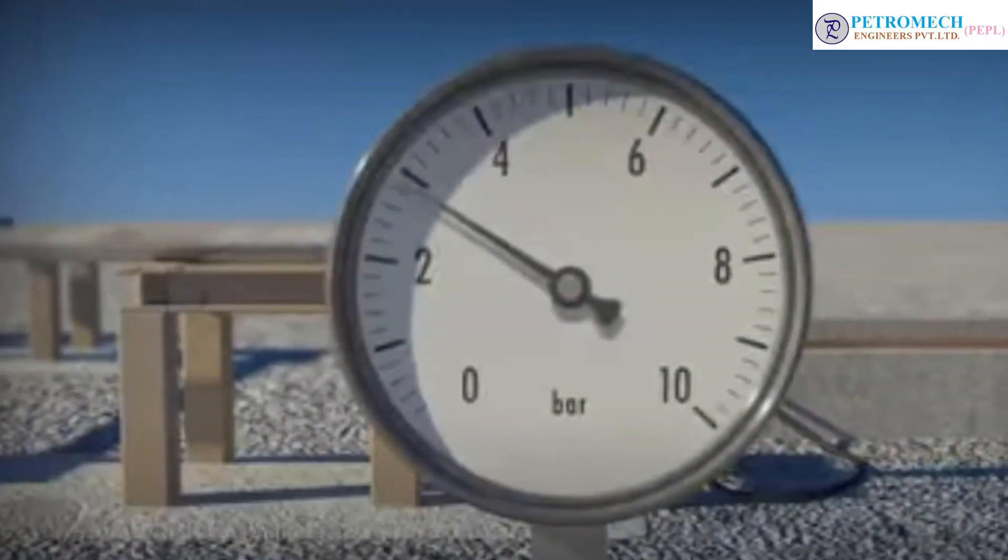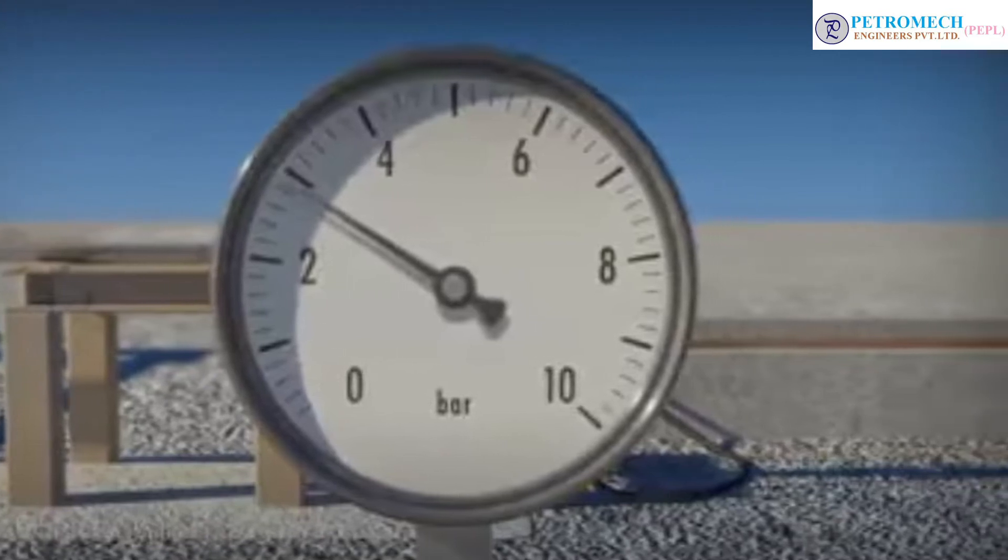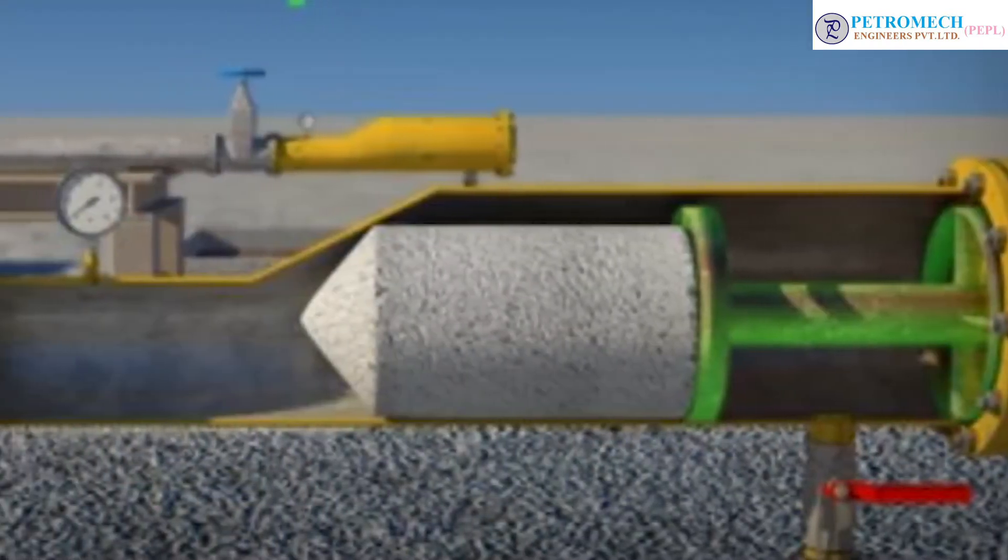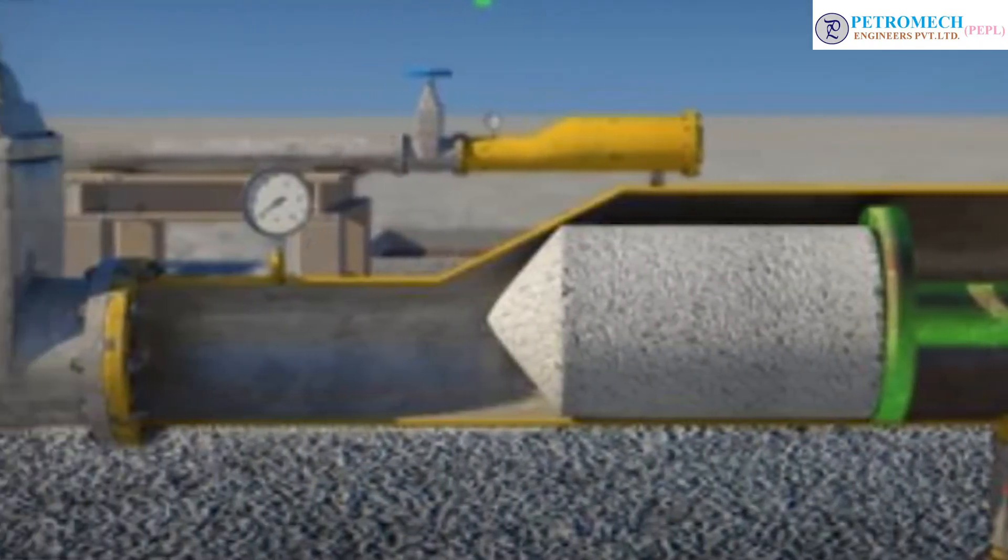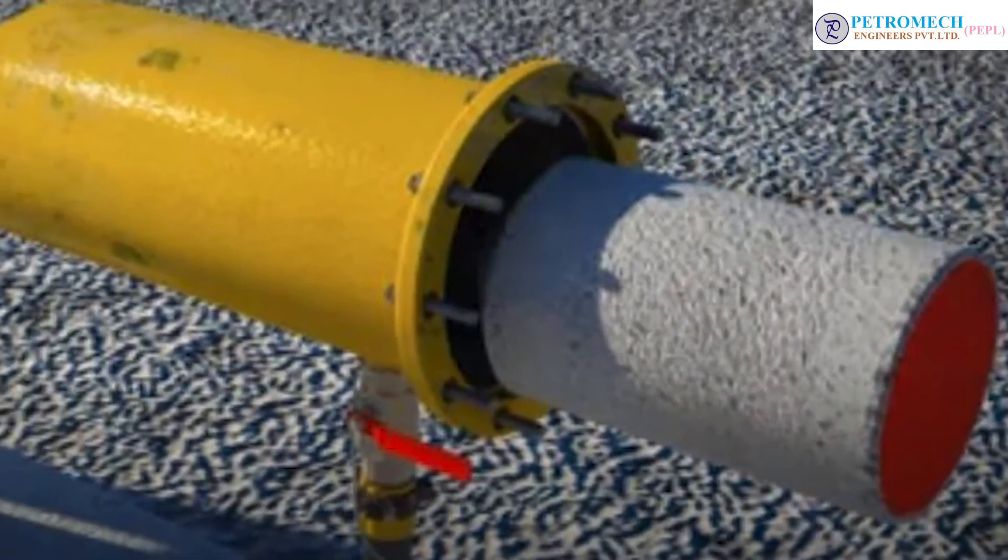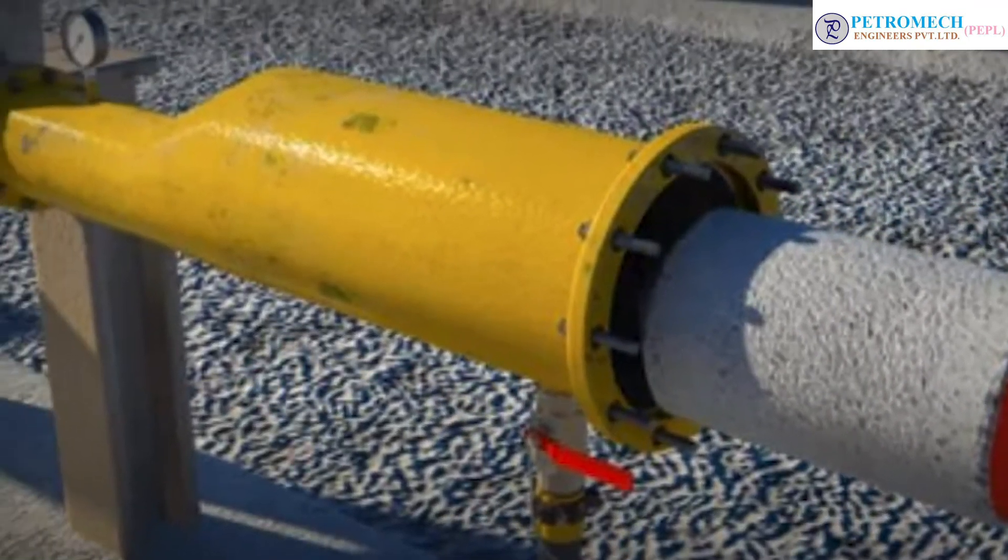Ensure that pressure of pig launcher and pipeline using pressure gauge is equalized before opening the main line valve to the pipeline. Insert key M1 to avoid reverse flow into the pig launcher from main line.